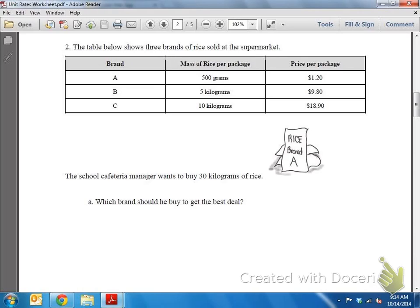So notice how B and C are kilograms, but A is in grams. So let's go ahead and convert that real quick. Again, there's 1,000 grams in 1 kilogram, so this is actually half a kilogram. So instead of 500 grams, I'm going to write 0.5 kilograms.